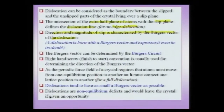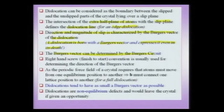The direction and magnitude of slip is characterized by the Burgers vector of the dislocation. The Burgers vector is very important — whenever we talk about a dislocation's energy or stress fields, the Burgers vector always appears. The Burgers vector can be determined using the Burgers circuit, and we typically use the right-hand finish-to-start convention.